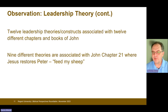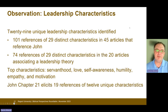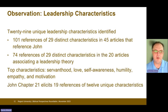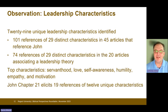Nine different theories are associated specifically with John chapter 21, which is the record of Peter being restored and the 'feed my sheep' dialogue between Jesus and Peter. On the leadership characteristics side, 29 unique leadership characteristics were referenced in the 45 articles, with 101 references total, and 74 of those references from those 29 characteristics were in the 20 articles. The top characteristics of servanthood, love, self-awareness, humility, empathy, and motivation were identified. John chapter 21 elicits 19 references of 12 unique characteristics.